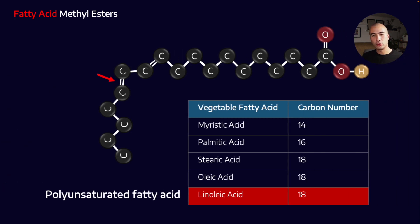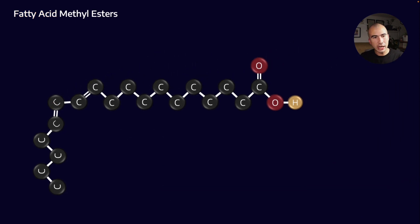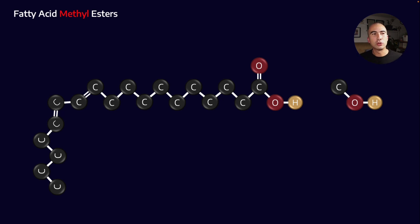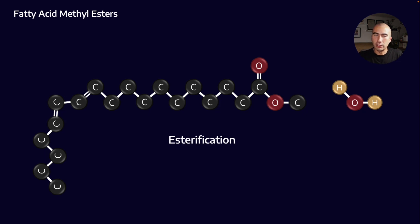We've explained fatty acid and saturation — so what's the methyl ester part? To create biodiesel, we take these fatty acids and react them with methanol. Methanol is the 'methyl' part of the name, and it undergoes esterification. Acid plus alcohol makes an ester plus water — so linoleic acid plus methanol gives us an ester. That's the esterification reaction, and that's how we get to fatty acid methyl ester — effectively what the biodiesel molecules are.